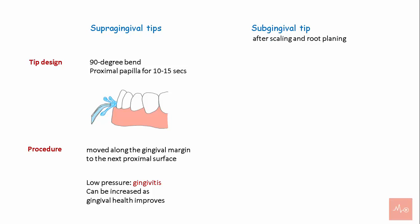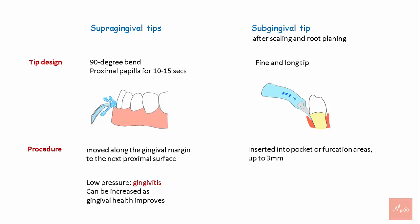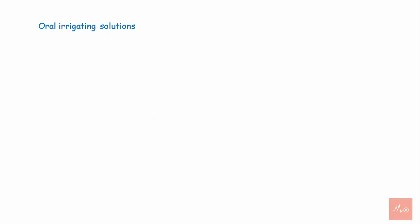Subgingival irrigation can be performed at home as well as in the dental office after scaling and root planing. These tips are fine and long. The subgingival irrigation tip should be gently inserted into the pockets or furcation areas up to 3 mm if possible, and each pocket should be flushed for a few seconds. This process is called lavage, or flushing of the periodontal pocket.